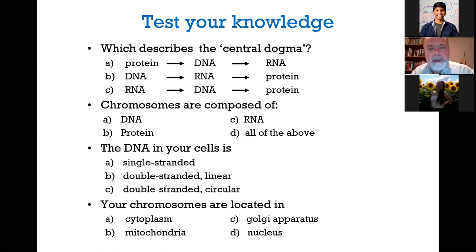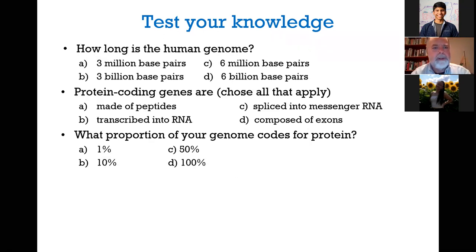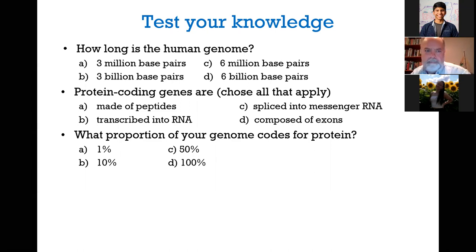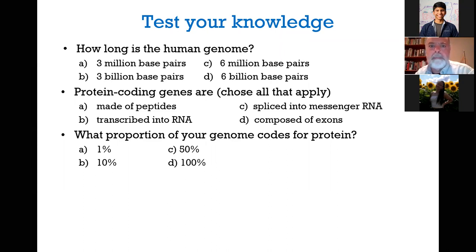So your chromosomes are located where? Cytoplasm, mitochondria, Golgi, or nucleus? D is correct — the nucleus. Now, how long is the human genome? Is it 3 million base pairs, 3 billion base pairs, or 6 million? Most answers are correct — it's 3 billion base pairs. That's huge. If you think about a CRISPR enzyme trying to find a site to cut in a genome, it has to scan all of this DNA to find that site, which is extraordinary.